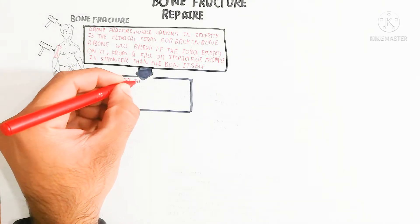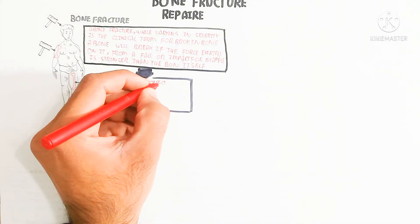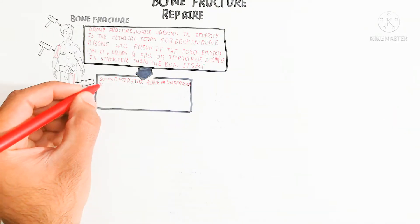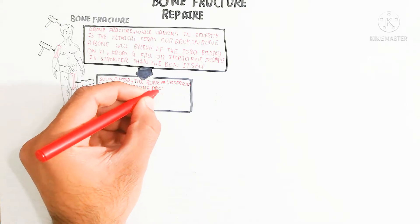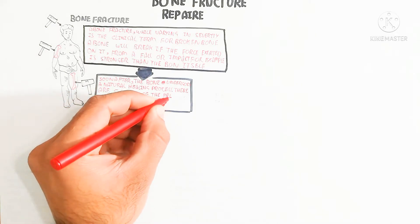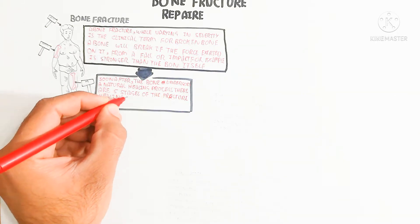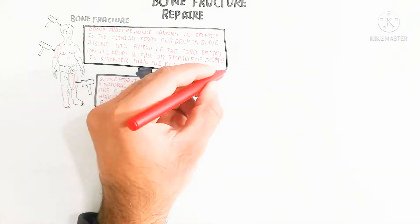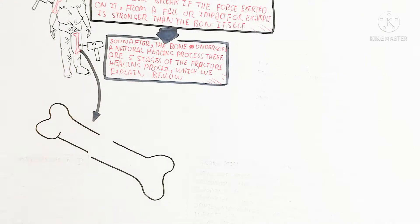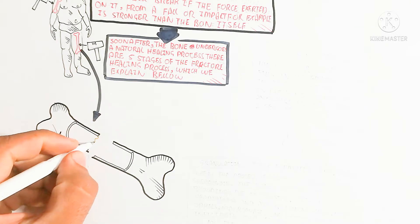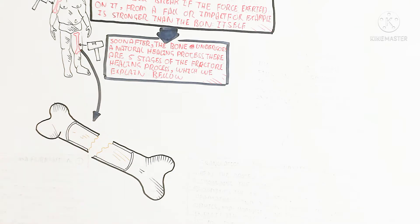The bigger bone will require more time as compared to the smaller bone for repair. The femur is a bigger bone, so after a fracture of the femur it takes more time, as well as the pelvic bone and other bones. For example, if the vertebral column is broken, its repair is very difficult.